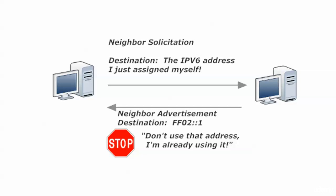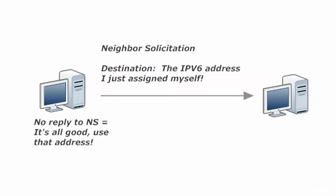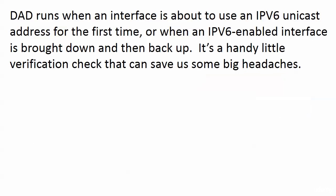It has been said that silence is golden, and in this case it is true. If the Neighbor Solicitation is sent out and nothing is heard back, then it's all good. No reply to the Neighbor Solicitation is what we're looking for — the host says to itself, "I didn't hear back, so I can go ahead and use that address."